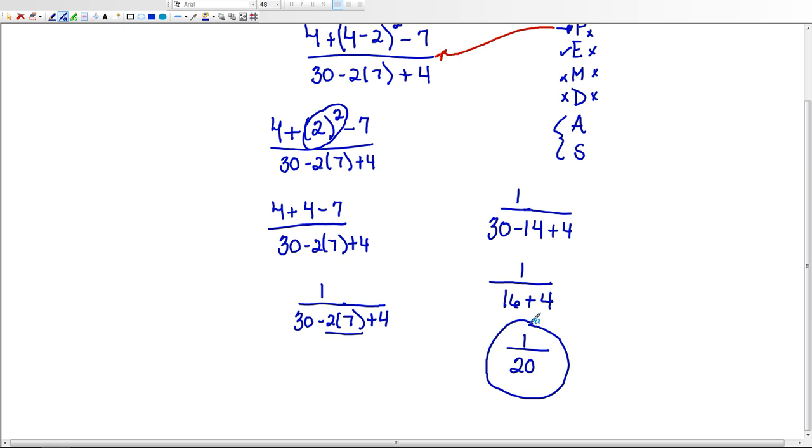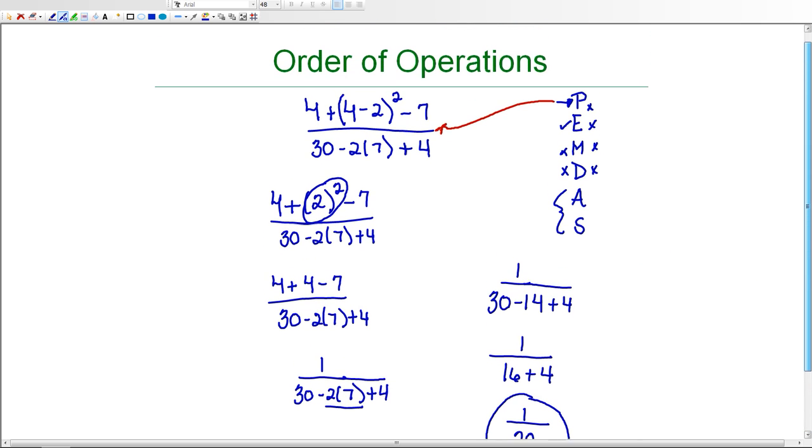So the final answer is 1/20. So again in this lesson we're just focusing on when you have a fraction bar with expressions in the numerator and denominator, make sure that you evaluate the numerator first and then the denominator.